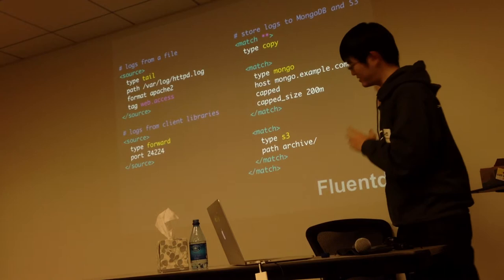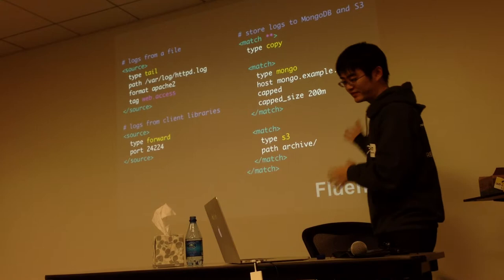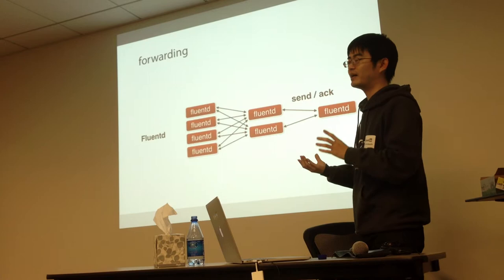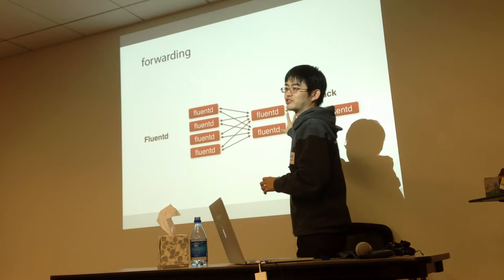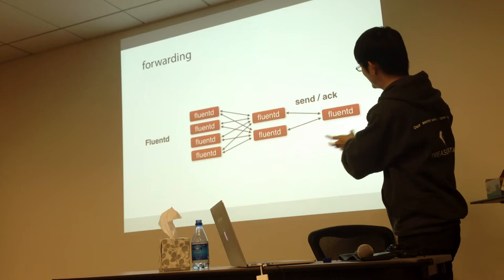We can build this system using Fluentd very easily. Fluentd also supports log forwarding. You might know Flume, which was created by Cloudera and is now an Apache project — it has the same structure and topology. A Fluentd instance can send logs to another Fluentd instance, and the destination server receives the data and forwards it into one log aggregation server.